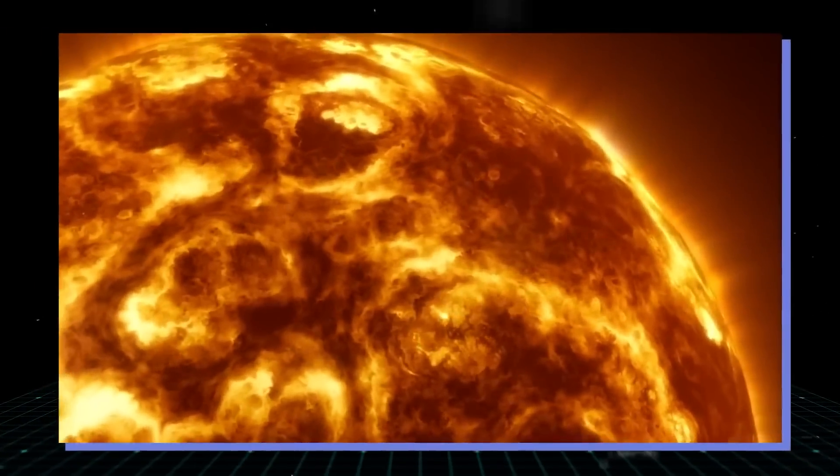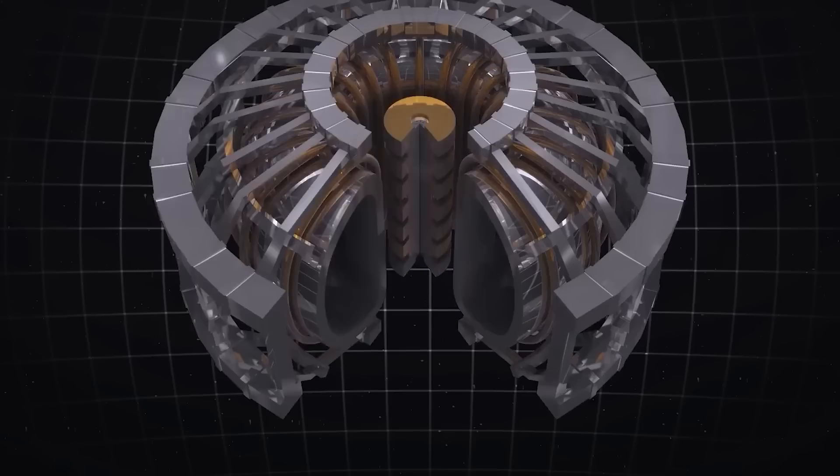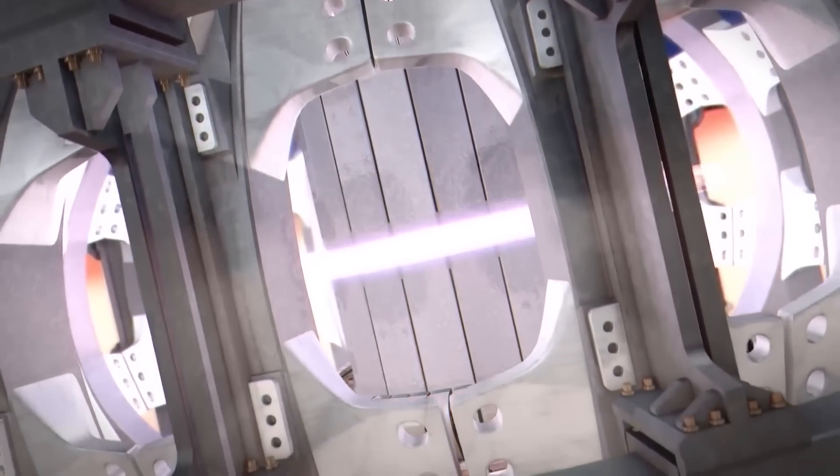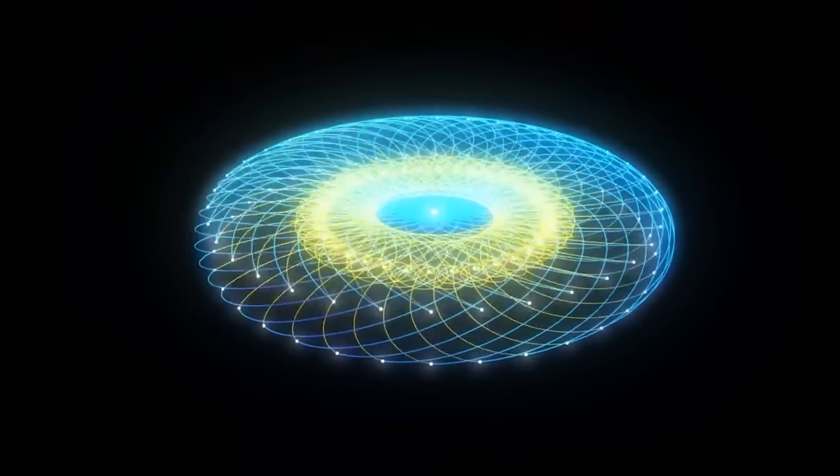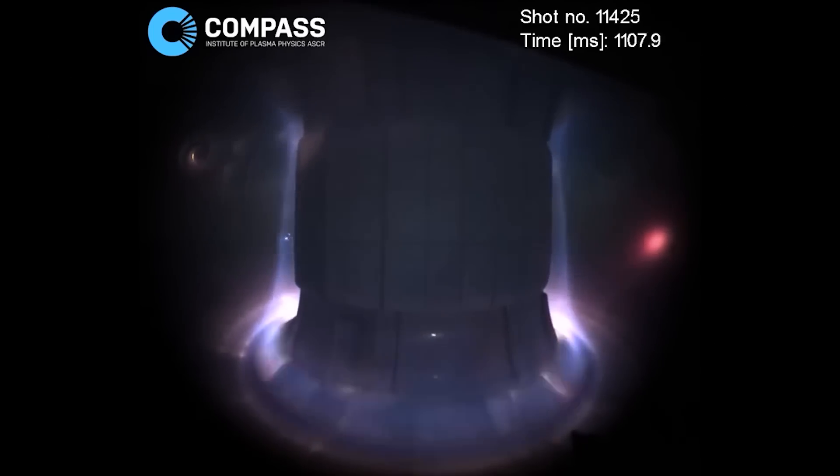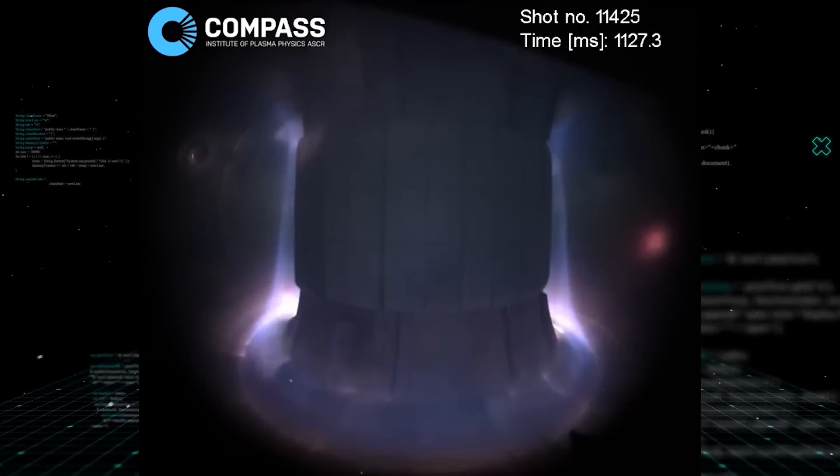Replicating the sun is no small task because you're attempting to recreate the conditions inside the sun and other powerful stars. The EAST uses the Tokamak design. A Tokamak is a machine that uses magnetic fields to confine a plasma in a donut shape that scientists call a torus. Fusion energy scientists claim that Tokamaks are the leading plasma confinement concept for future fusion power plants.